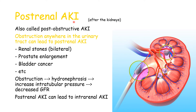Next we have post-renal AKI — a problem after the kidneys, in the urinary tract. This is also called obstructive AKI. An obstruction anywhere in the urinary tract can lead to post-renal AKI. A classic example is renal stones, which can block urine flow, leading to a buildup of pressure within the kidney so it cannot filter out substances. Importantly, renal stones need to be bilateral to cause AKI — if one kidney is blocked, the other can simply do the job.